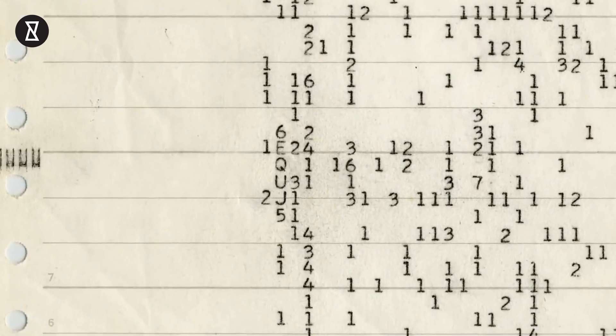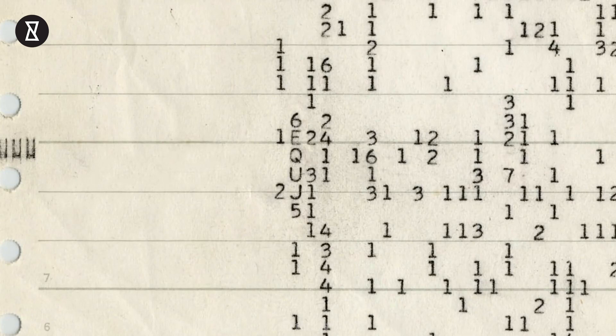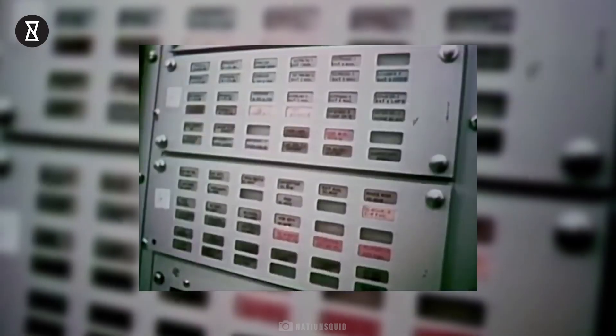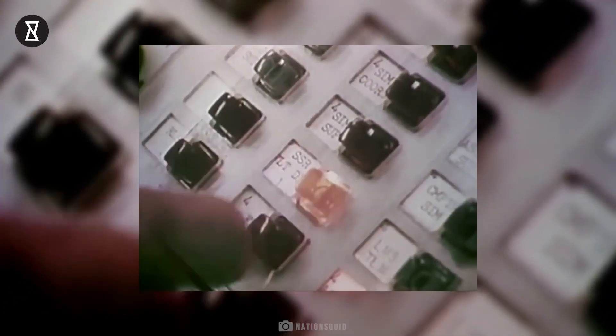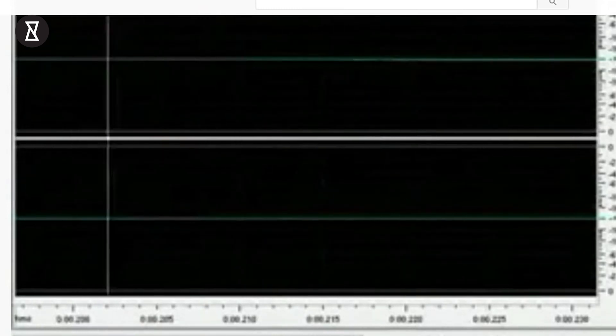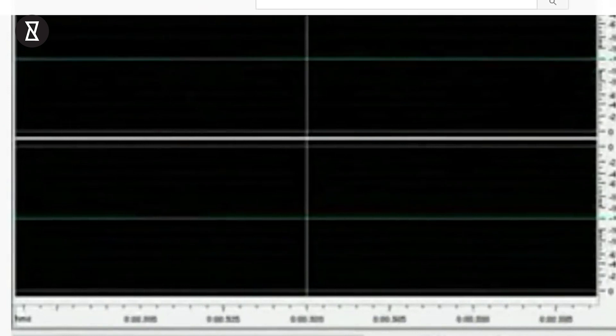Astronomer Jerry R. Eman, who detected the signal, was so impressed by the result that he circled on the computer printout the reading of the signal's intensity and wrote the comment 'Wow' beside it, leading to the event's widely used name. The entire signal sequence lasted for the full 72-second window during which Big Ear was able to observe it, but has not been detected since, despite several subsequent attempts.